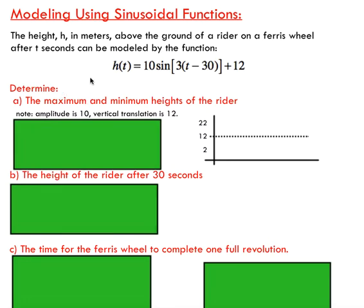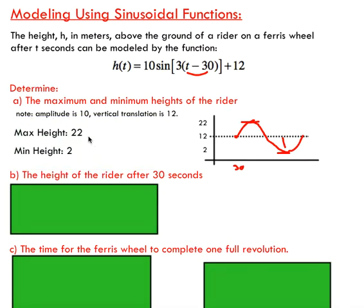We're going to analyze this function. Let's start by looking at the max and min heights of the rider. This thing has a vertical translation of 12, so we're shifting upwards 12. We've got an amplitude of 10, which tells us we're going to be going up 10 units from our vertical translation. We're shifting to the right by 30, so let's say we're going to start here at 30. Because we've got an amplitude of 10, we're going to reach a max height of 22, and we're going to go down by 10 units from that vertical translation to reach 2.